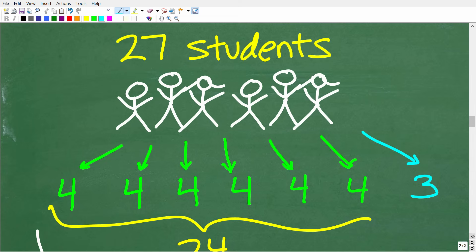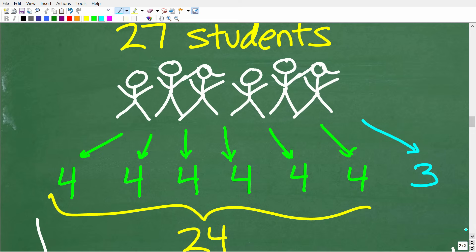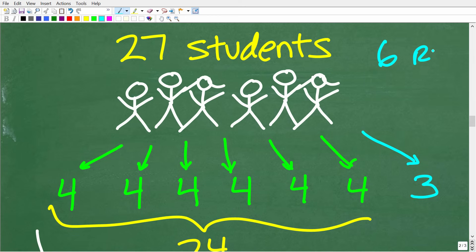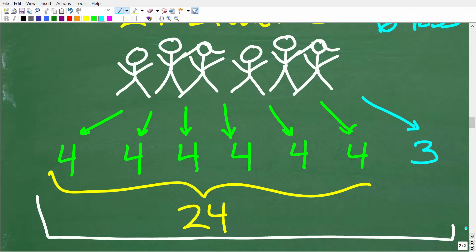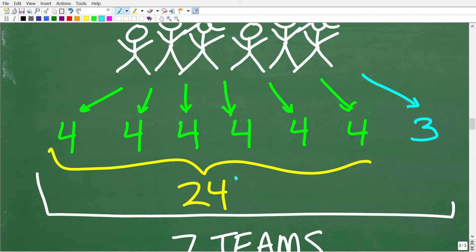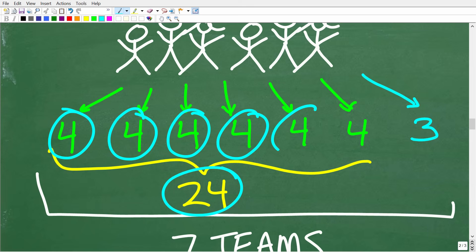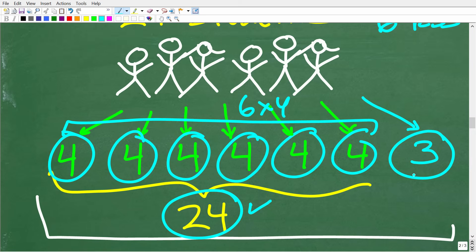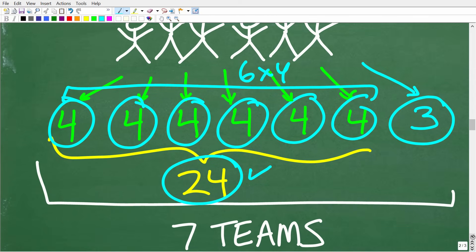So here we have 27. We divided 27 by 4 and, of course, the answer is 6 with remainder 3. So that means we're going to have 6 teams of 4. So 1, 2, 3, 4, 5, 6. So we have 6 teams of 4. So 6 times 4, of course, is 24. But we have 27 students.